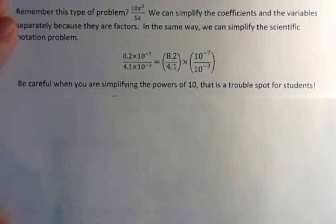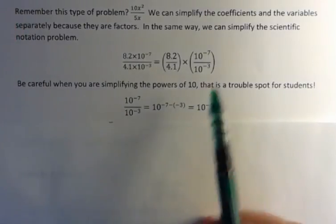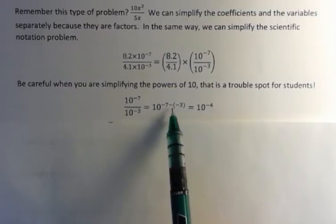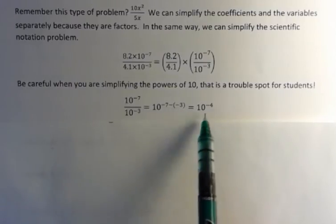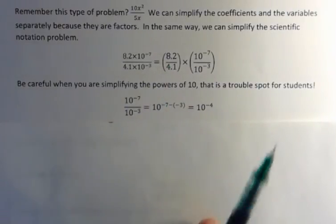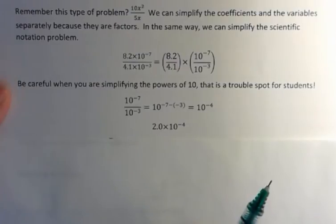And I want to warn you, because the powers of 10, that's a trouble spot for students when you're simplifying that, so be careful. I think you can see that we're going to get negative 7, because it's negative 7 minus negative 3, which is actually plus 3, which gives us 10 to the negative 4. And also you can see that 8.2 divided by 4.1 is 2, so we have 2 times 10 to the negative 4th power.